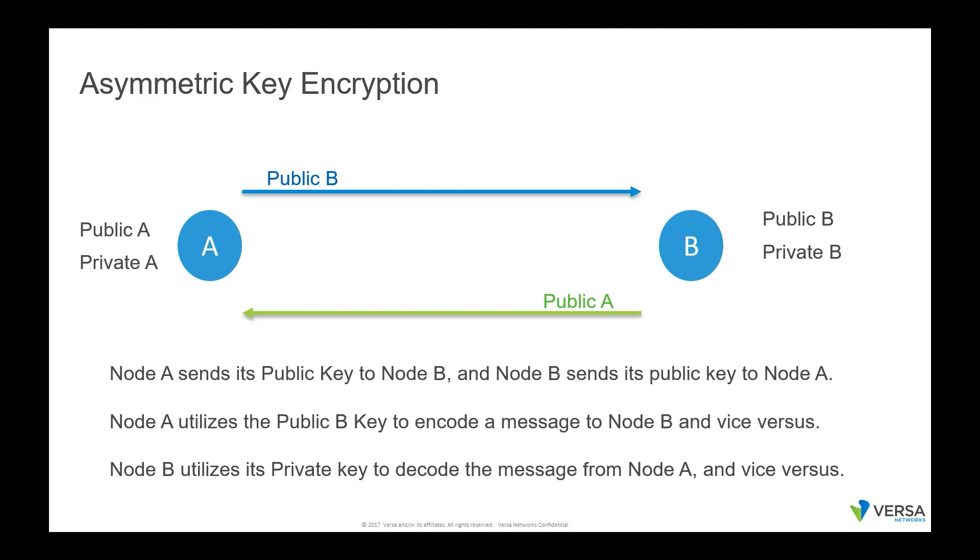Asymmetrical key exchange creates a more secure connection, as a public key is created and shared with the other side. The other side utilizes this public key to encrypt the data, but the public key is insufficient to decrypt it — the private key from the receiver is needed to decrypt the information. However, if the device is compromised and the private key is readable, your security risk still exists.